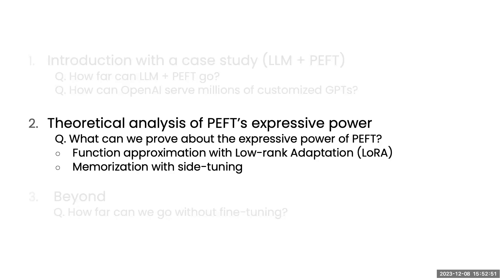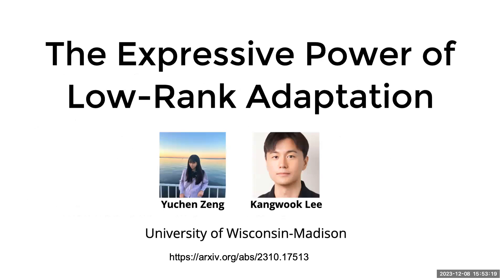This naturally raises a theoretical question: why does a low-rank update of weight matrices in every layer — with rank as small as one, two, or three — give us enough flexibility to completely change the model to a different problem? It's completely non-obvious. I looked for theory work on this and found virtually nothing, so we started working on the theory problem to study the expressive power of low-rank adaptation.